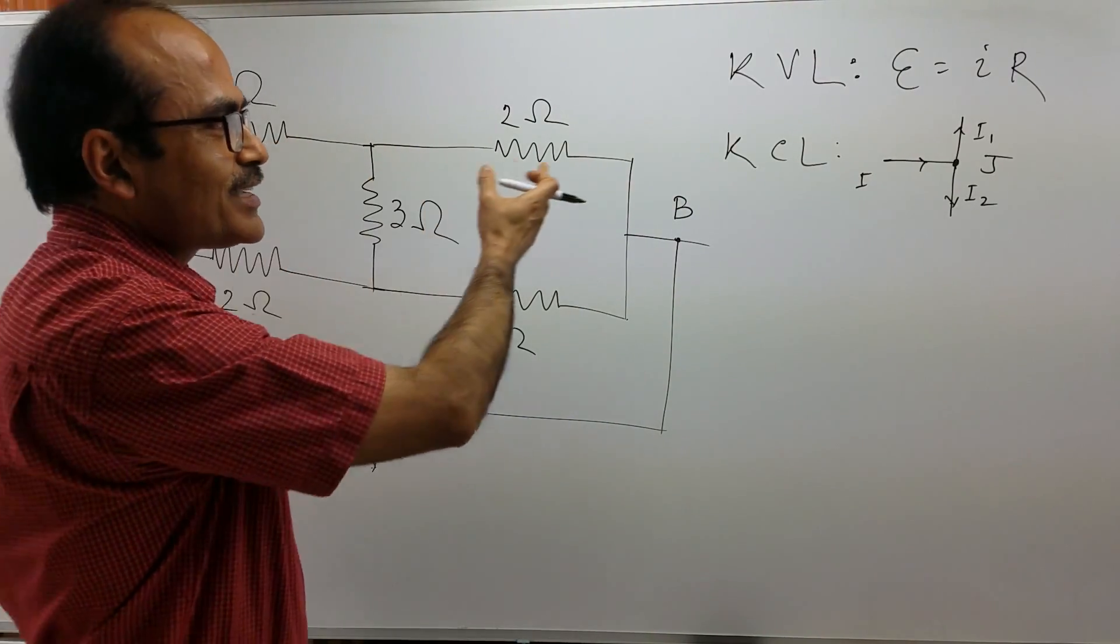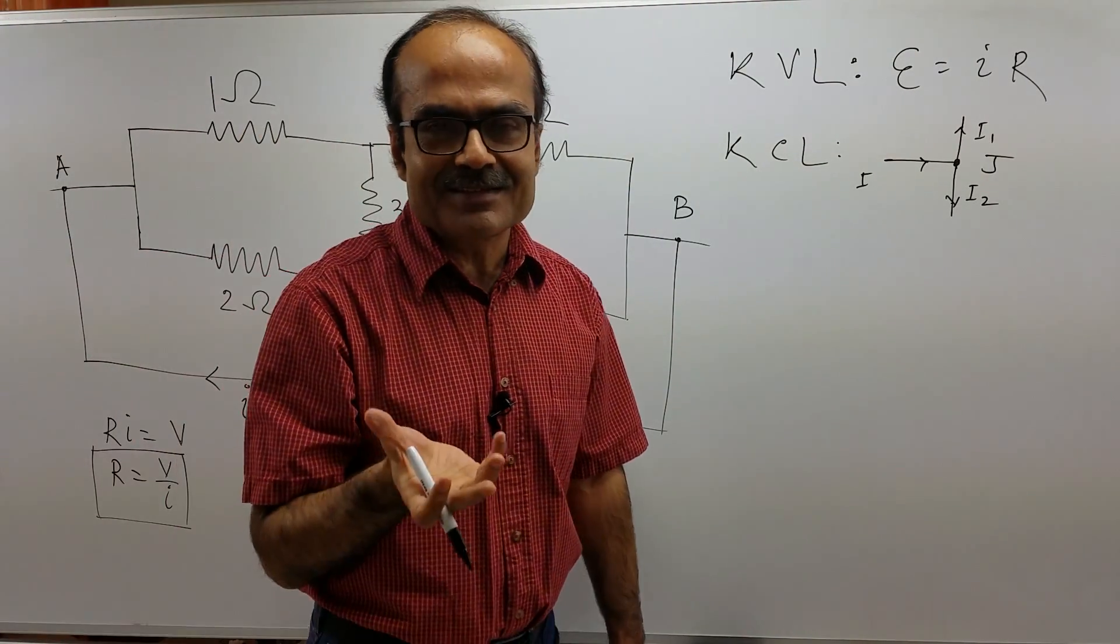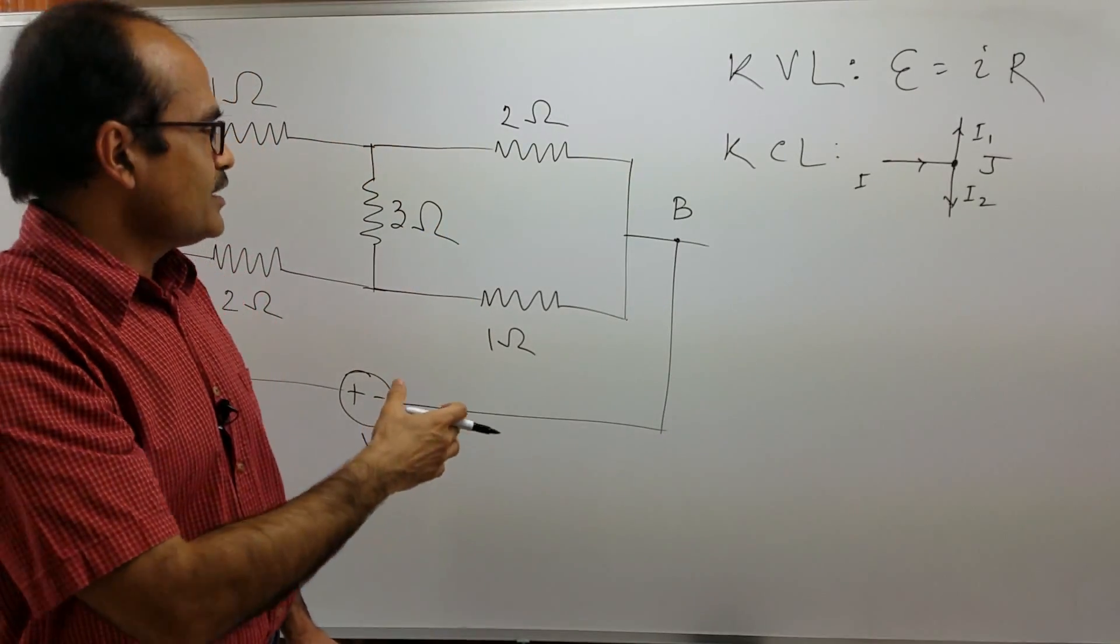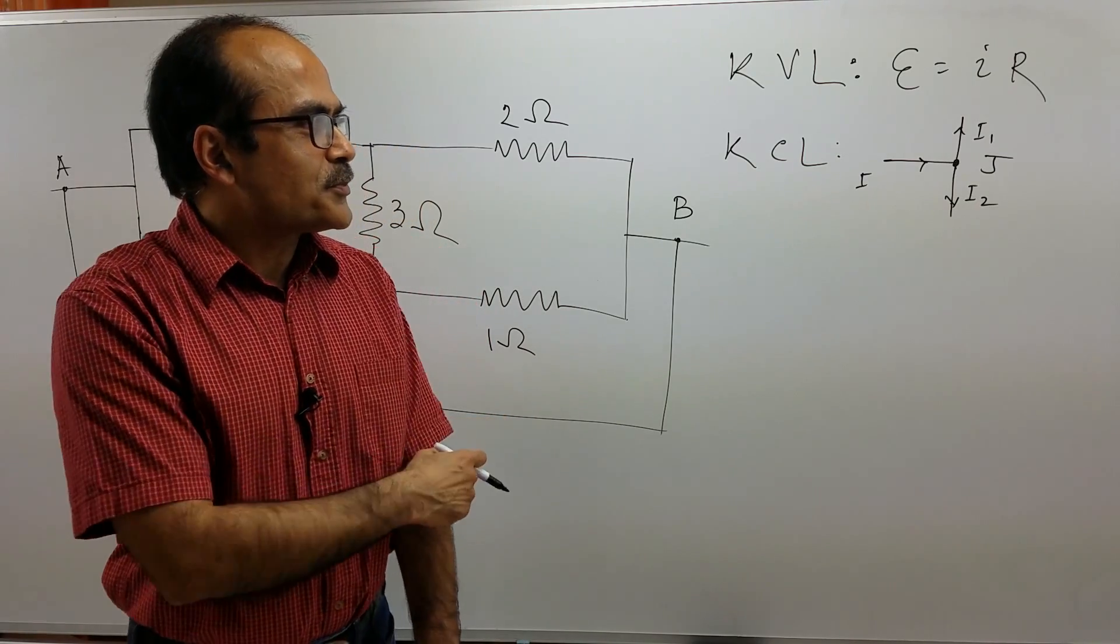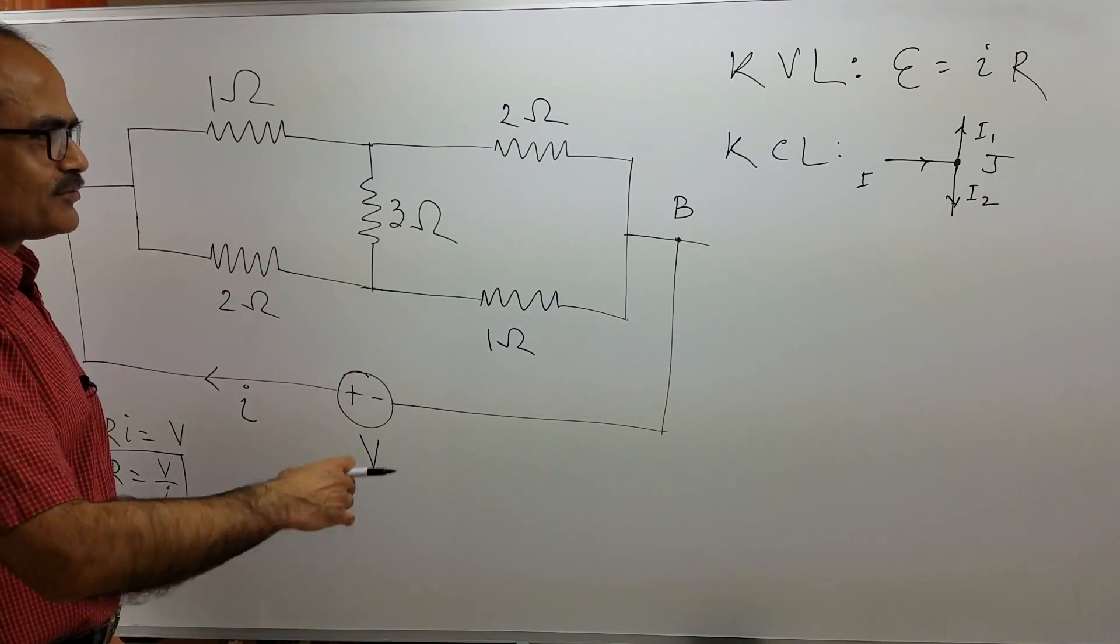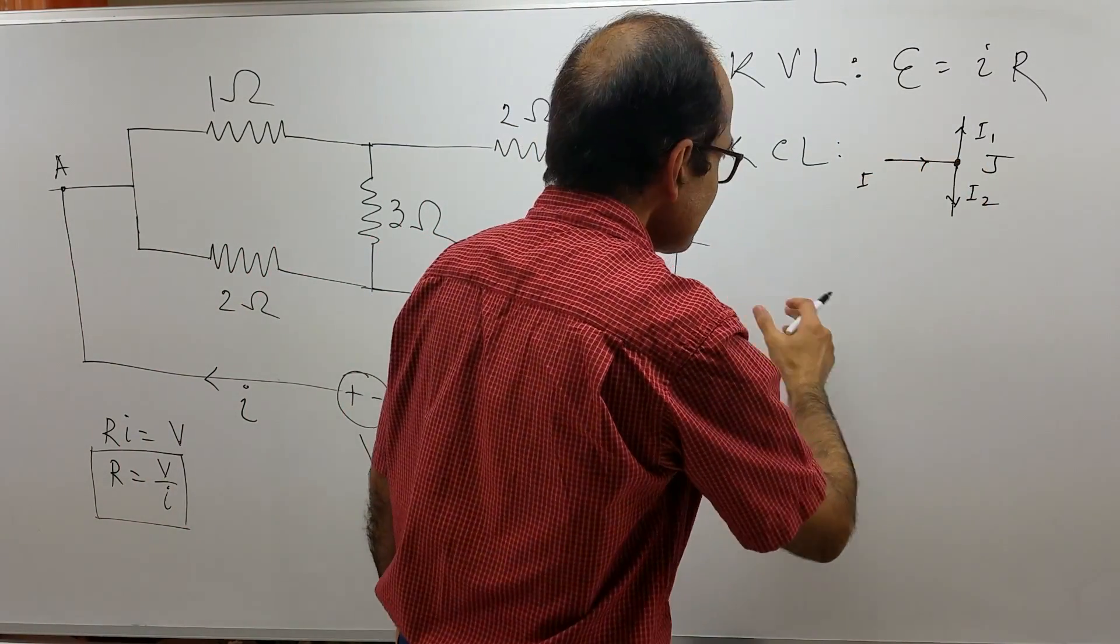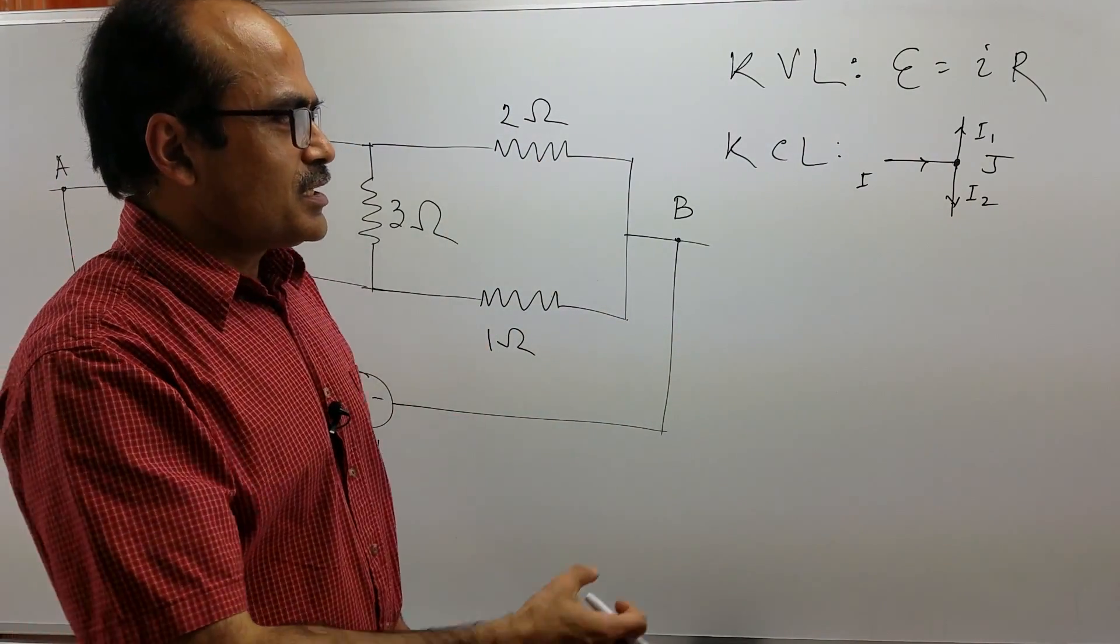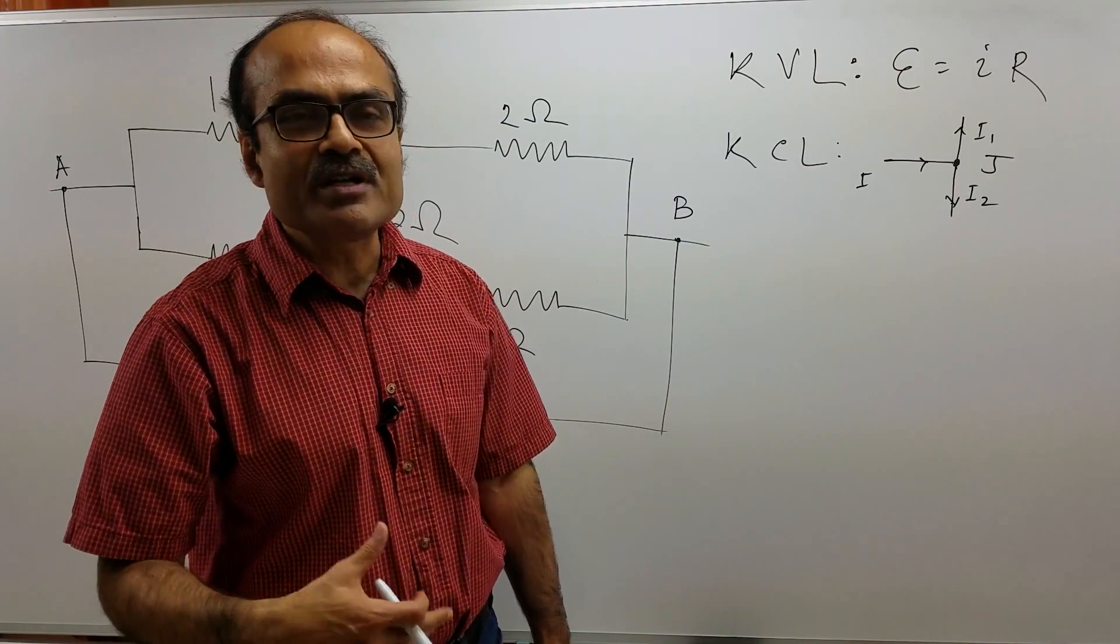KVL says that in any loop, the total EMF supplied by all the cells connected is equal to the voltage dropped across all the resistors, capacitors, inductors.